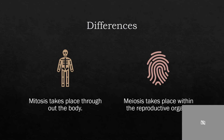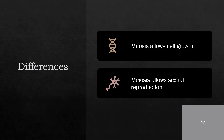Mitosis takes place throughout the body. Meiosis takes place within the reproductive organs. Mitosis allows cell growth, while meiosis allows sexual reproduction.